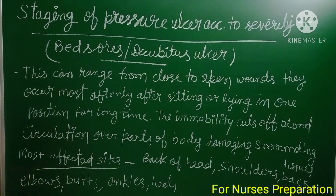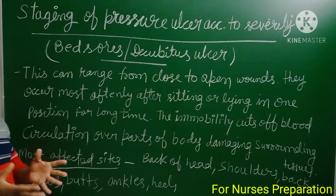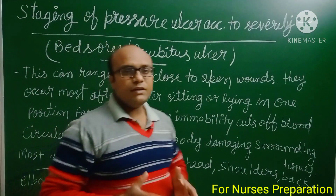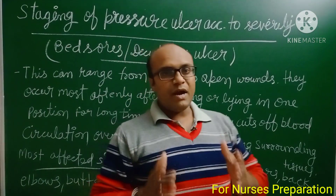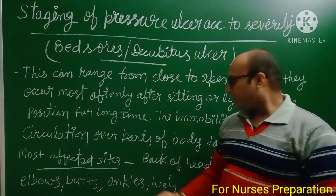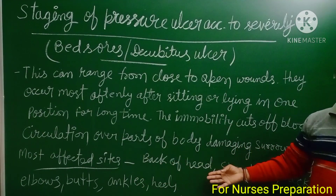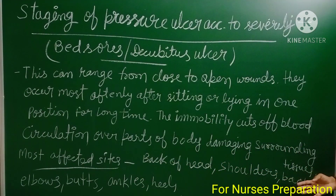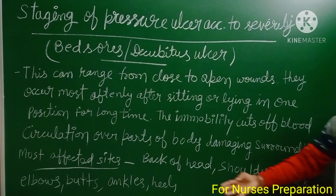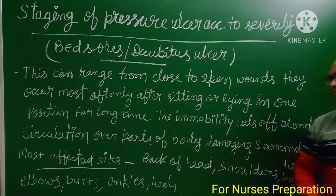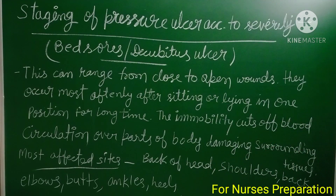Now let's talk about the most affected sites — the main areas where bedsores occur. These include the back of the head, shoulders, back, elbows, buttocks, ankles, and heels. These are the important parts where pressure ulcers are most commonly found.